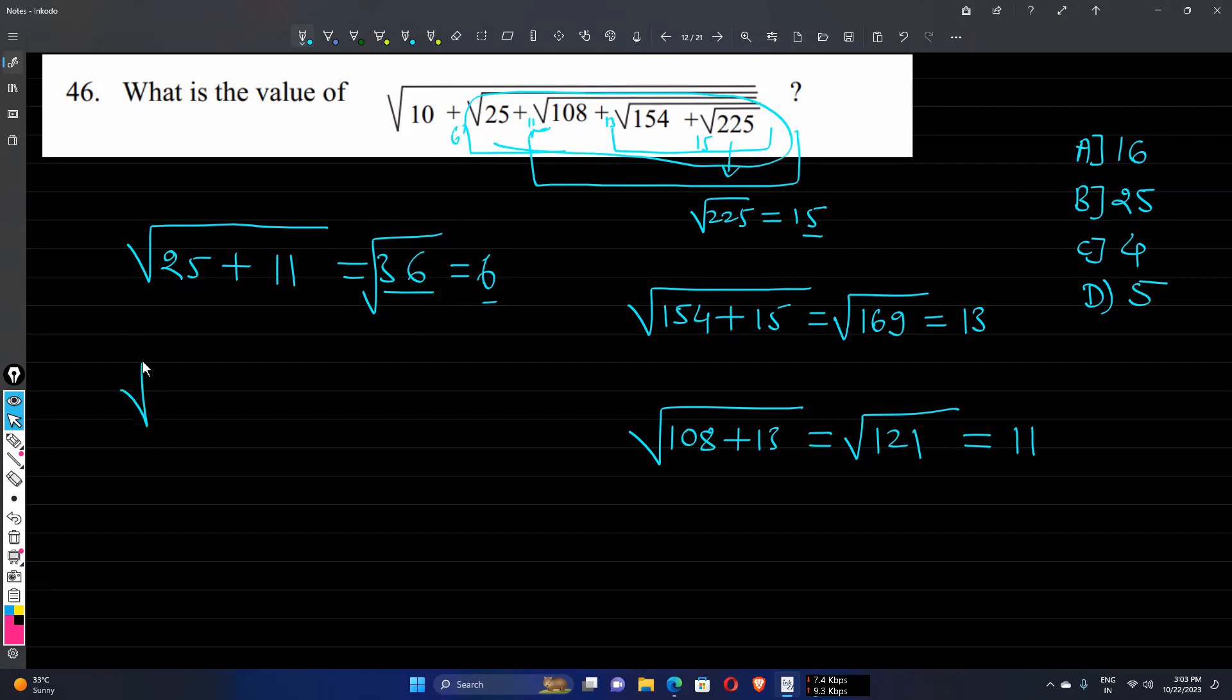The value of all this expression is 10 plus 6, which is again in the root, so it will give us √16, which is equal to 4. Meaning the value of all this expression or this surd is 4.